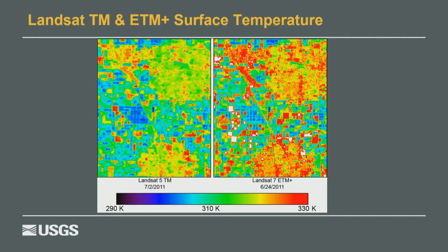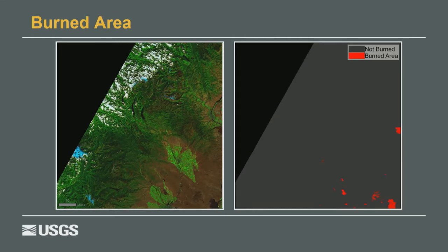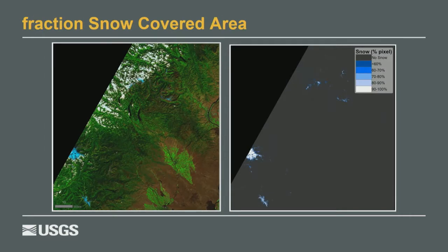As we move to higher-level data products like surface temperature — extremely desirable for evapotranspiration modeling and as a trigger for harmful algal blooms in areas with intense agricultural land use — we've recently released a surface temperature product in ARD format going back to the Landsat TM record. We're also generating a burned area product mapping areas disturbed by forest fires, wildfires, or prescribed burning for each acquisition, as well as dynamic surface water extent and fraction of snow-covered area. The idea is to meet community needs not just for data, but for information that can be more readily ingested into process models or decision support models.